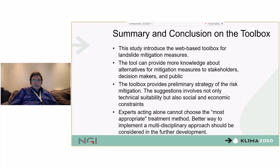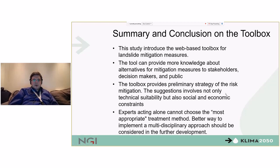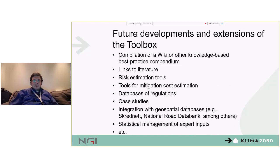In summary and conclusion about the toolbox: this study introduces a web-based toolbox for landslide mitigation measures. The tool can provide more knowledge about alternatives for mitigation measures to stakeholders, decision makers, and the public. It provides a preliminary strategy for risk mitigation, involving not only technical suggestions regarding technical suitability, but also social and economic constraints. It is important that experts acting alone cannot choose the most appropriate method — a multidisciplinary approach should be considered. Further developments planned include a compendium of best practice, links to literature, risk estimation tools, tools for mitigation cost estimation, a database of regulation case studies, integration with geospatial databases, and statistical management of expert inputs.